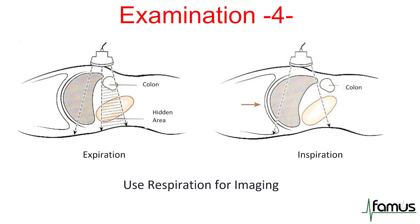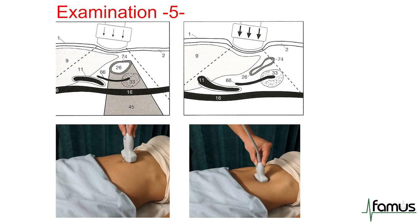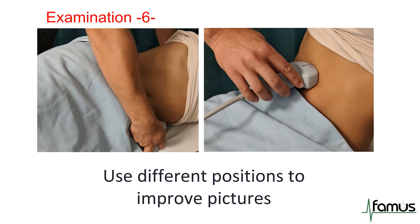There are tricks to handle this. One is to use deep inspiration, which pushes the liver down and moves the colon out of the way so we can see the kidney behind the liver. Another method is to slowly squeeze out the air in the colon by applying pressure, allowing us to see structures behind a fully collapsed colon. Different patient positions can also improve picture quality — for instance, a left lateral position is perfect for echocardiography and also displaces bowel in the abdomen.